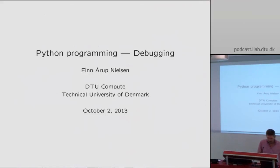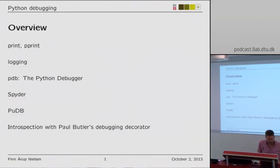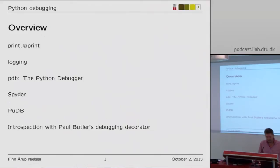So there's Python programming and debugging. The most simple way is similar to when you're debugging — put in some print statements here and there. That's actually a thing called pprint that might format the output slightly better.